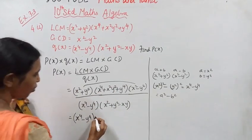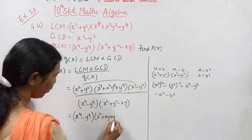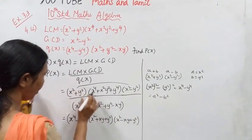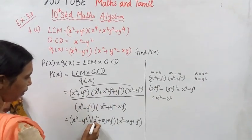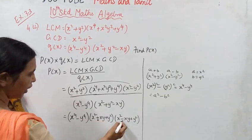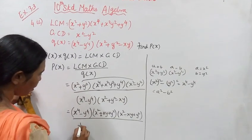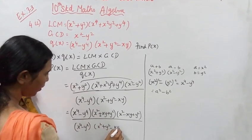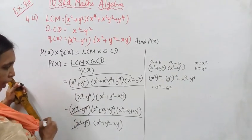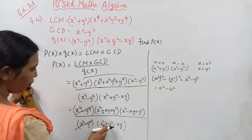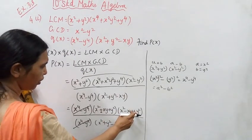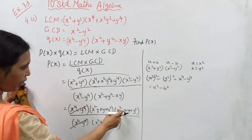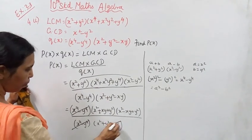We expand: x squared plus xy plus y squared, and x squared minus xy plus y squared, giving x to the power 4 plus x squared y squared plus y to the power 4. Then x to the power 4 minus y to the power 4 cancels out. We are left with x squared plus y squared minus xy and x squared plus y squared minus xy, which also cancel.